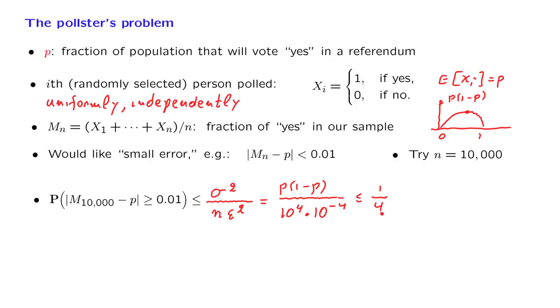I would like you to have a probability of error that's less than 5%. So suppose now that we want to change this and make it only a 5% error, 5% or less.